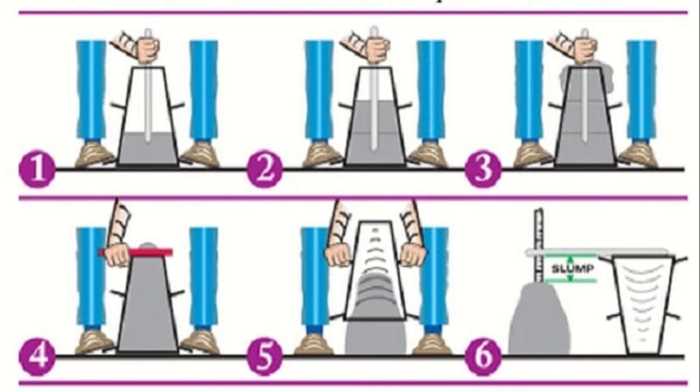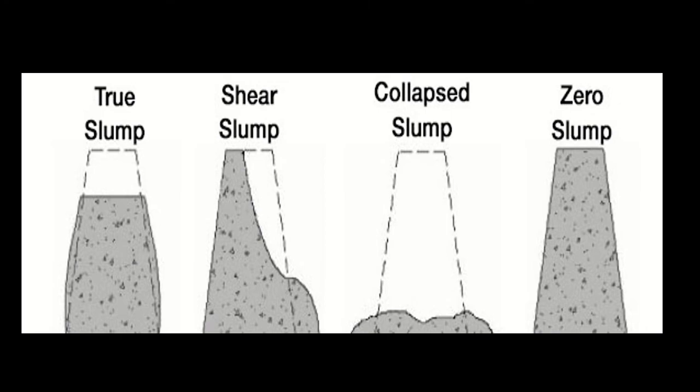When the slump value is between 0 to 25 mm, we call it very low workability. Between 25 to 50 mm is low workability. Between 50 to 100 mm is medium workability. And between 100 to 175 mm is called very high workability.